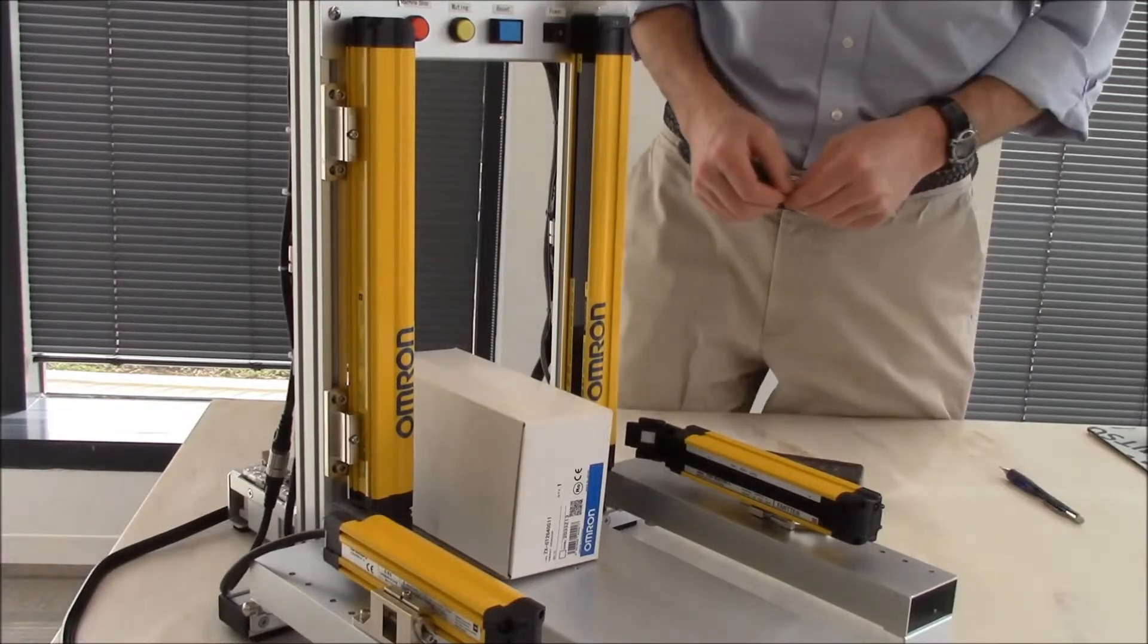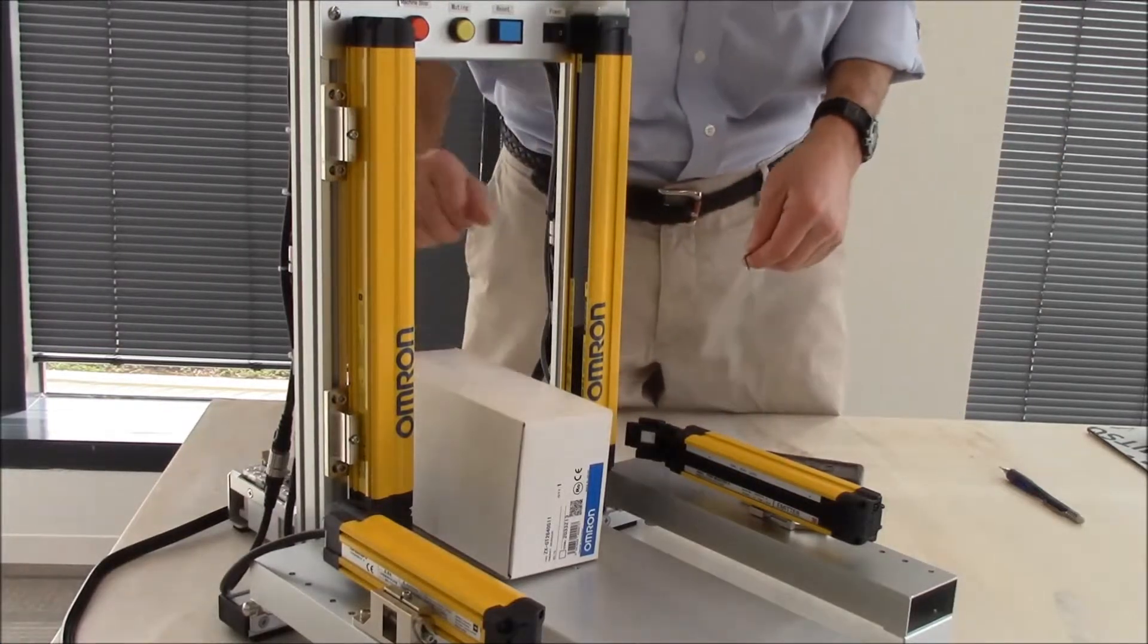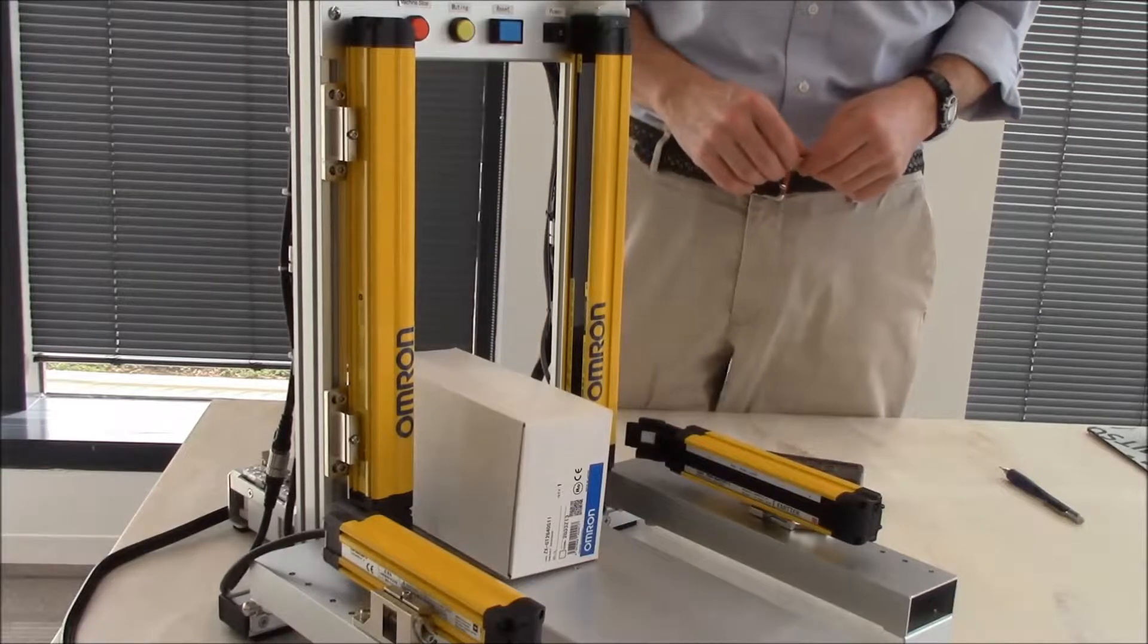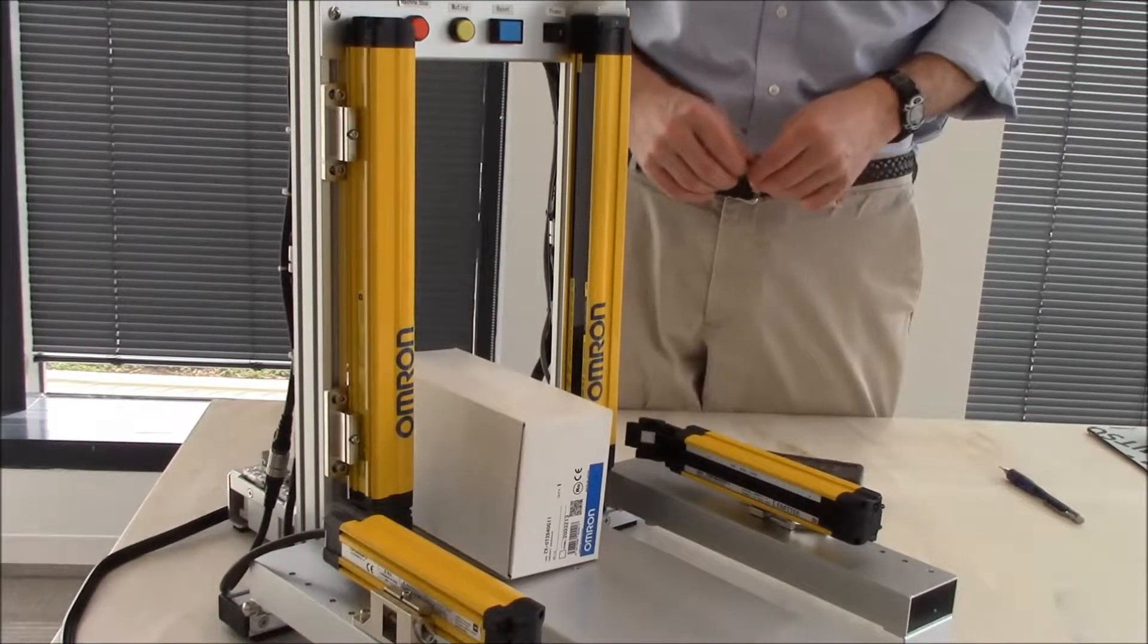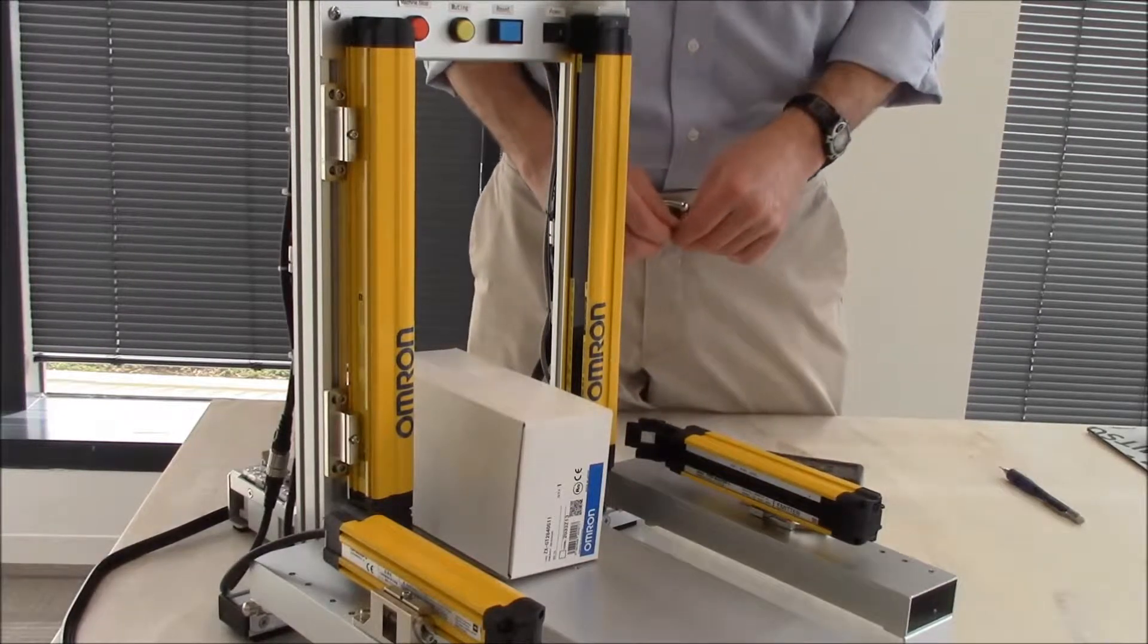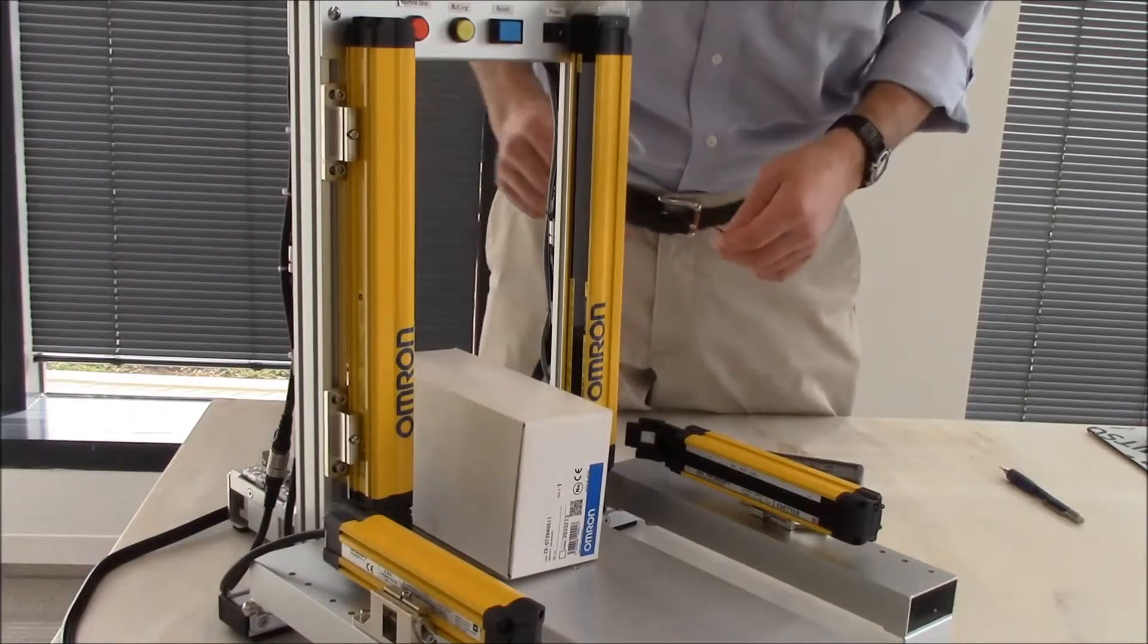Today I'm going to demonstrate how to set up the fixed blanking option using our F3SG safety light curtain. Right now I have the light curtain in the off condition.